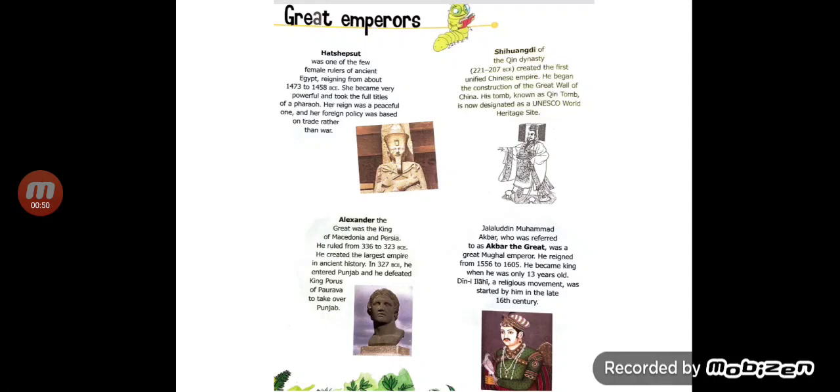Next is Shi Huangdi of the Qing dynasty, from 221 to 207 BCE. He created the first unified Chinese Empire, began the construction of the Great Wall of China, and his tomb, known as Shin Tomb, is now designated as a UNESCO World Heritage site. So he was the one who started the construction of the Great Wall of China.